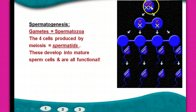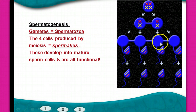We have the first division and then the second division. In males, sperm maturity doesn't happen until puberty — they don't have fully functional sperm until then, and they make four.